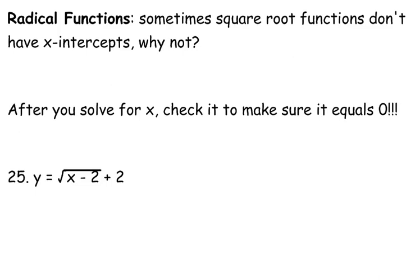Sometimes square root functions don't have x-intercepts. Why would they not have x-intercepts? Does anybody remember those graphs that we did? Sometimes we shifted them and moved them, but what was different about a square root function as opposed to a polynomial function or a rational function?